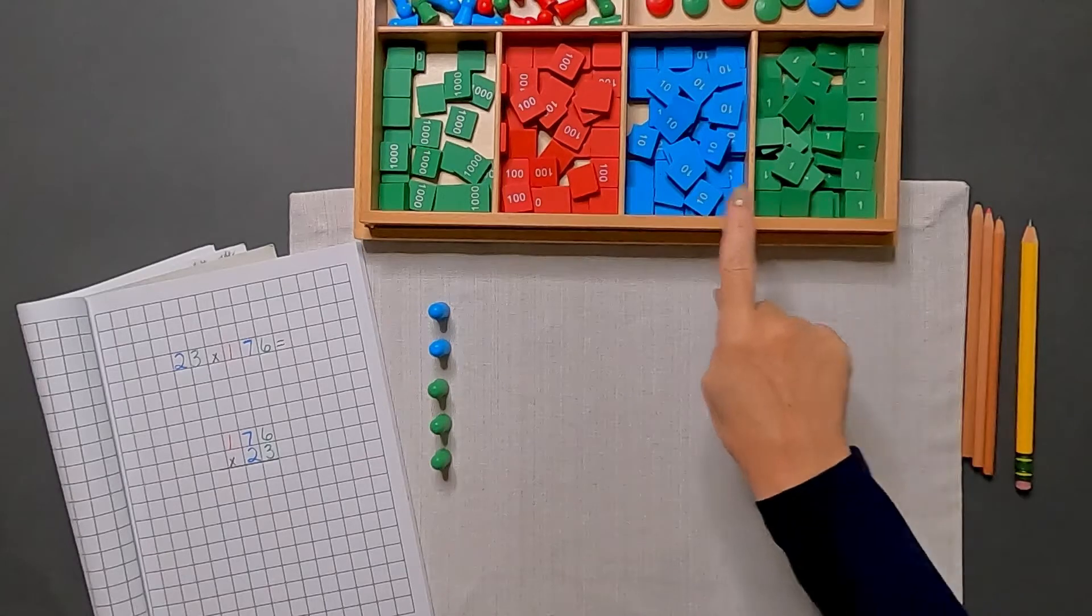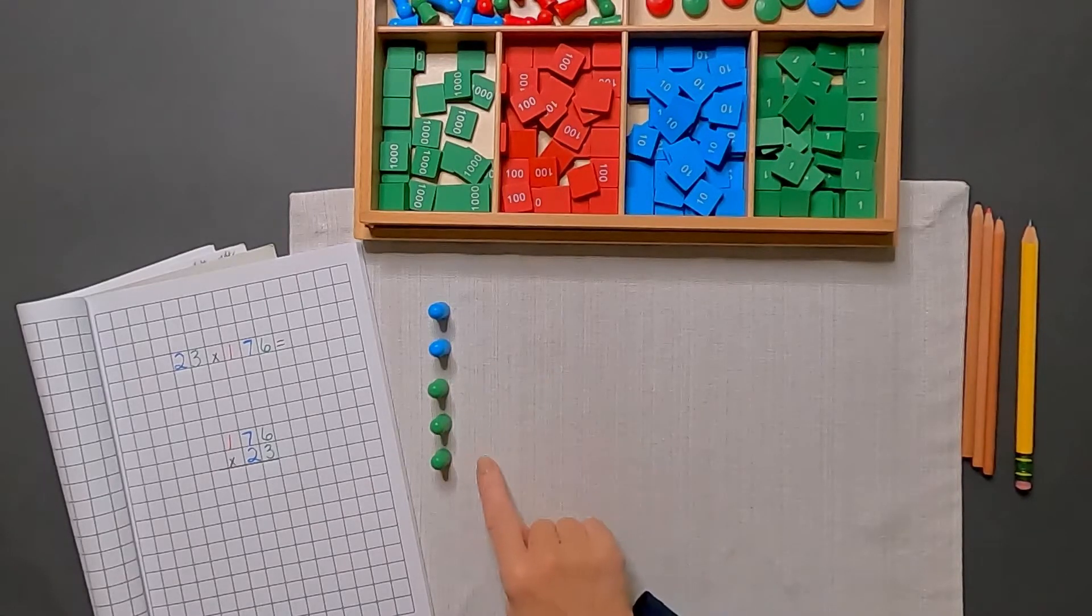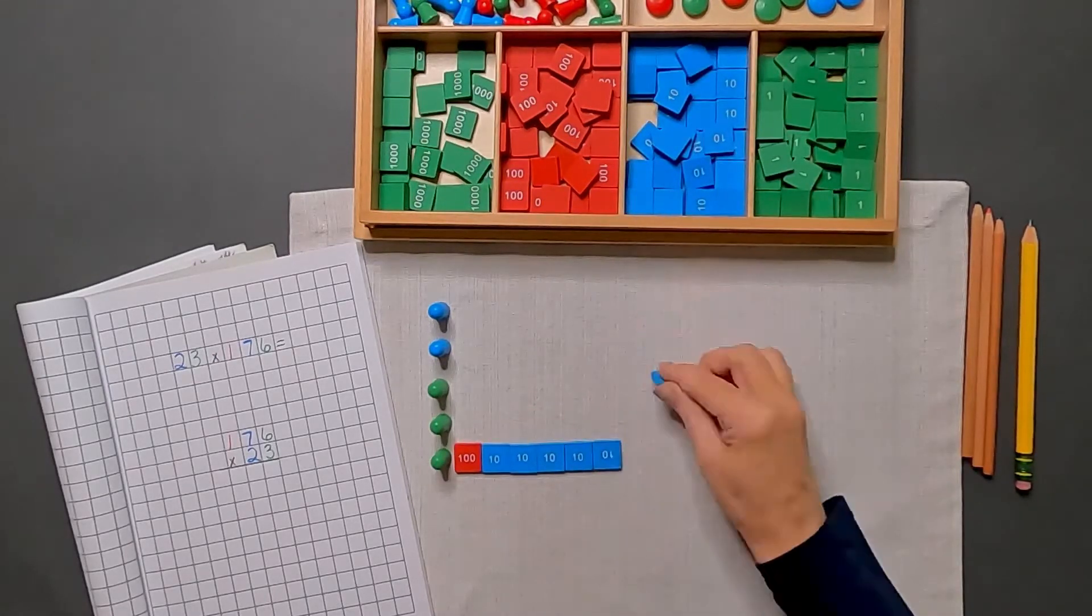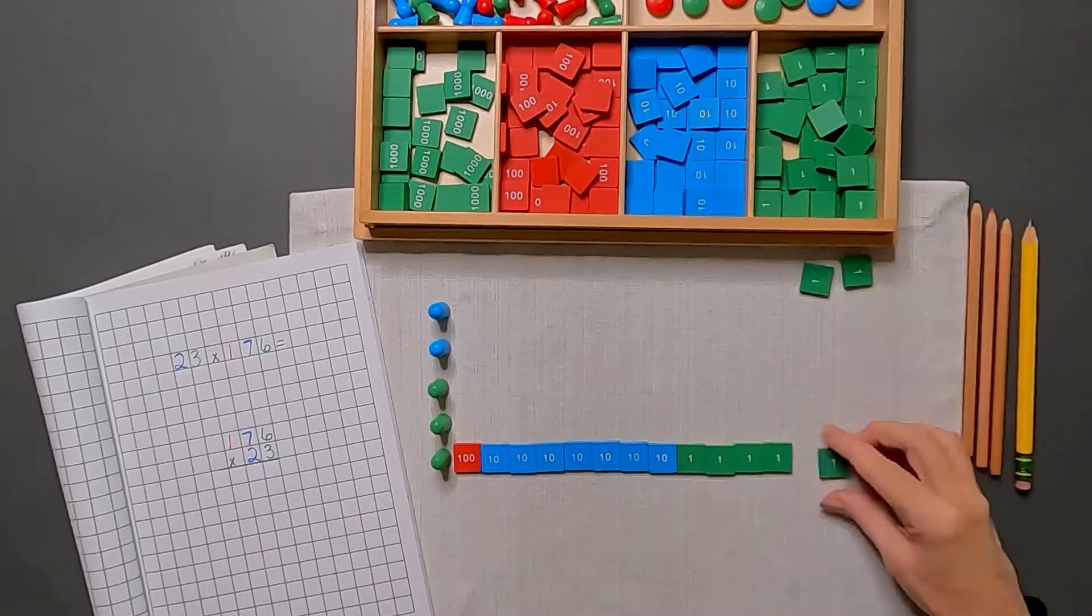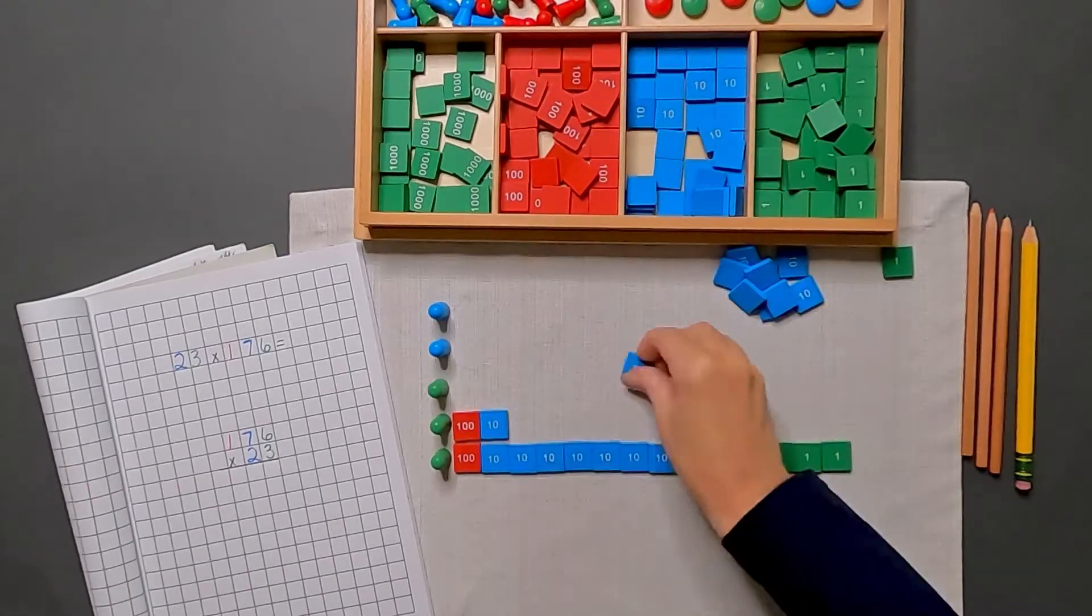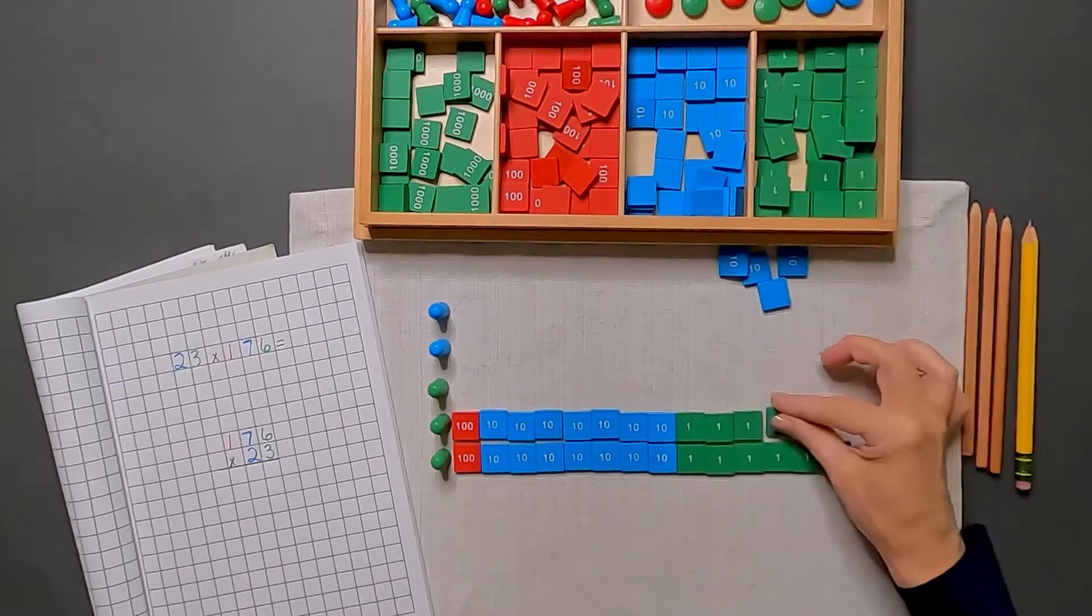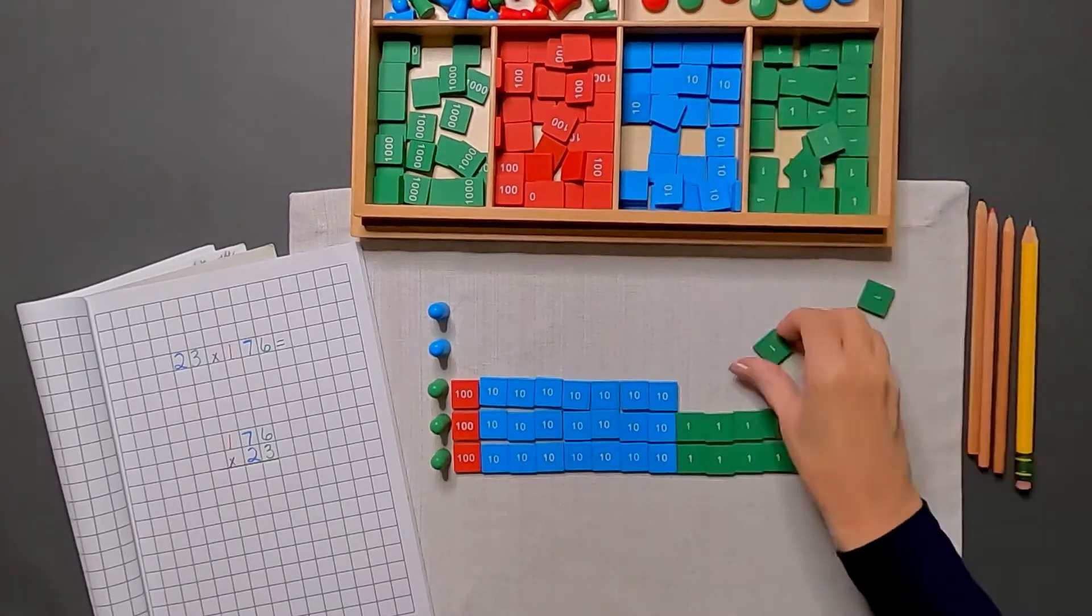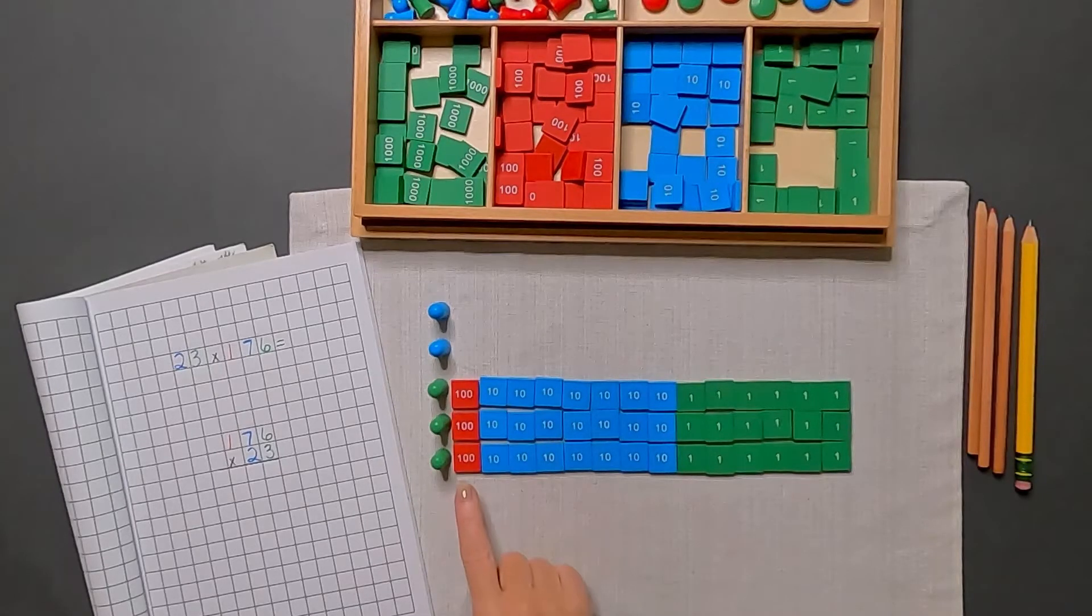Let's go ahead to our stamps and make 176 on my mat here beside my units. Okay, I've gone ahead and made 176 three times.